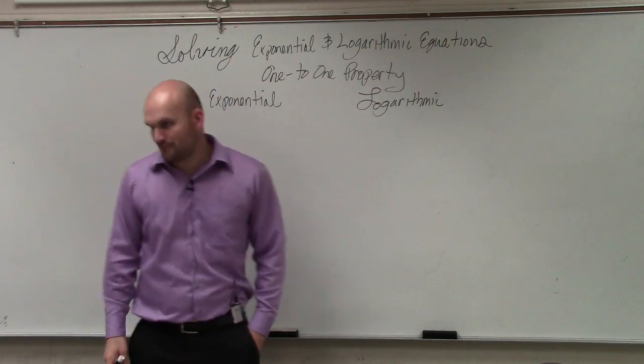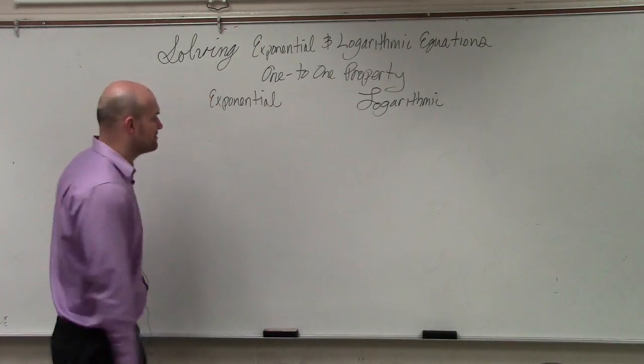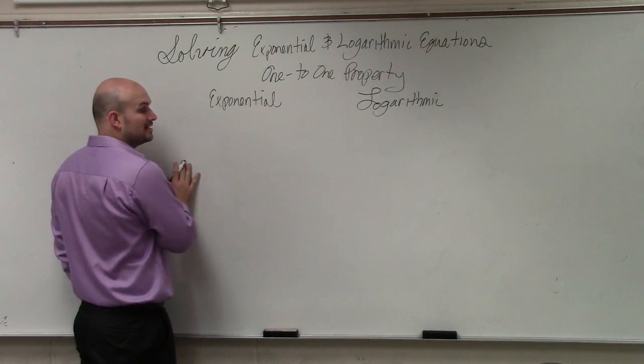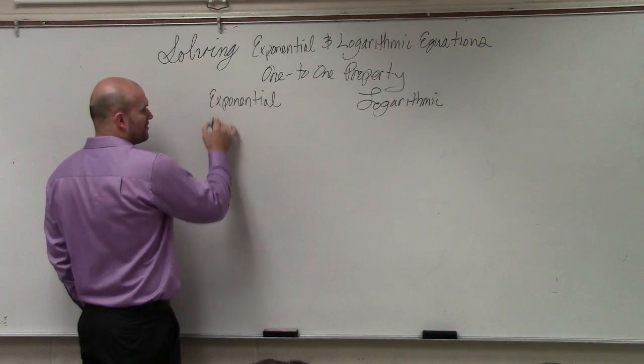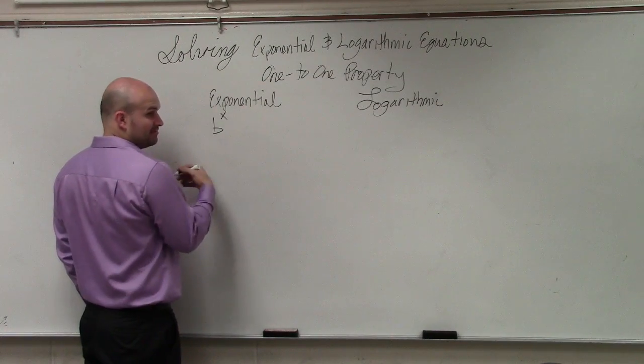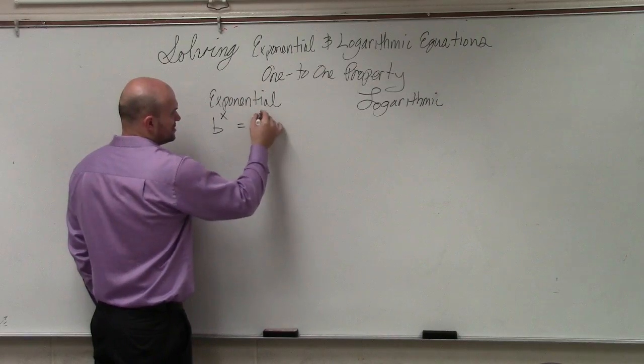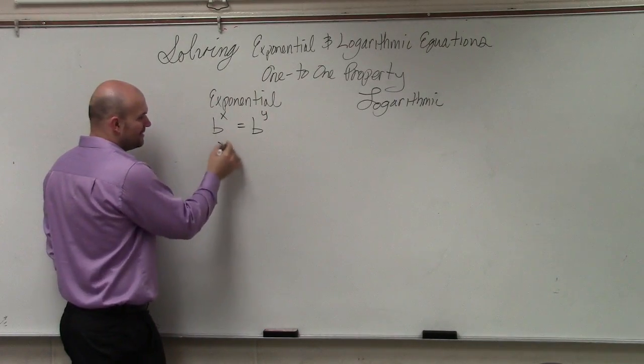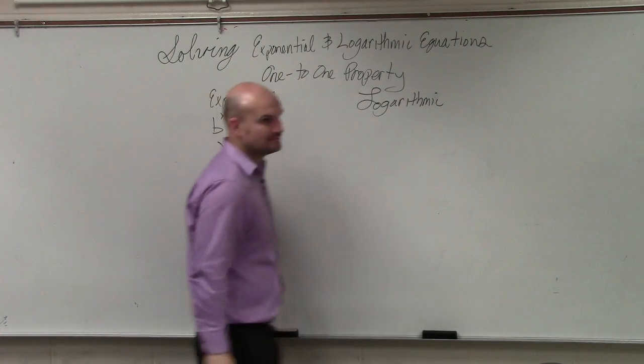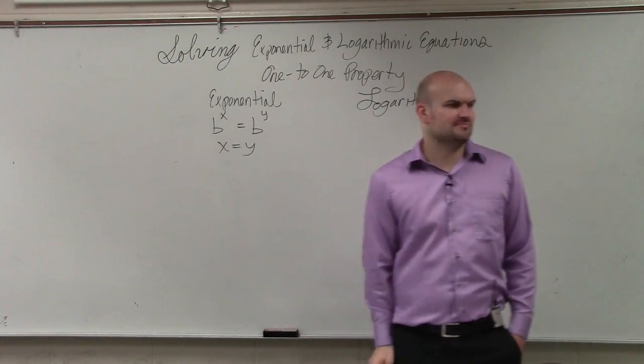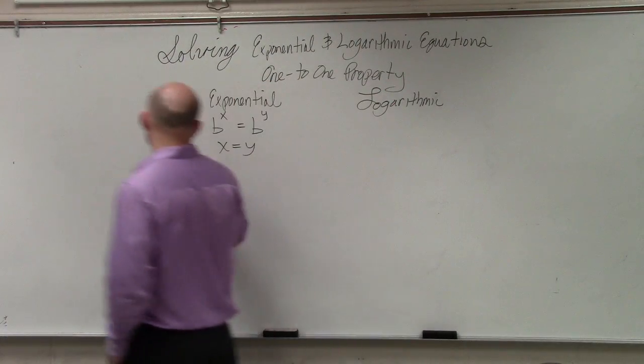Exponential, though, I think is the easiest one to start off with, or the easiest one to understand, so that's why we'll start off with it. Basically, the one-to-one property says if you have an exponent, b raised to the x equals b raised to the y, then x equals y. It seems pretty simple enough. But let's look at an example.